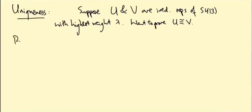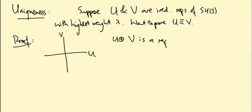So the idea of the proof is, it's a trick. You form the space U direct sum V. This is still a representation of SU(3). It's no longer irreducible because it's got these two subrepresentations, but it is a representation.